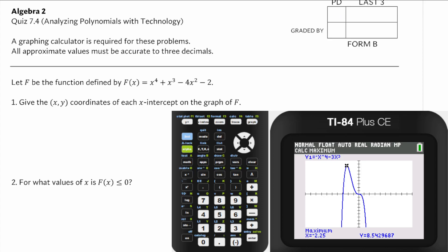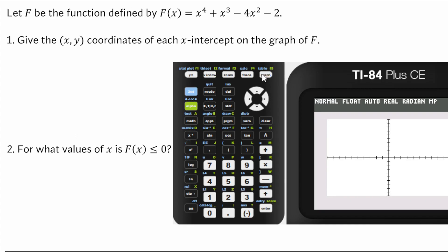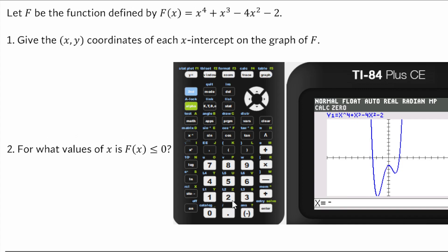Form B. We're working with f of x equals x⁴ + x³ − 4x² − 2. We enter that in y1 and graph it in the standard window. For the x-intercepts, we calculate a zero between x equals negative 3 and x equals negative 2, and we get negative 2.631 and y is 0.